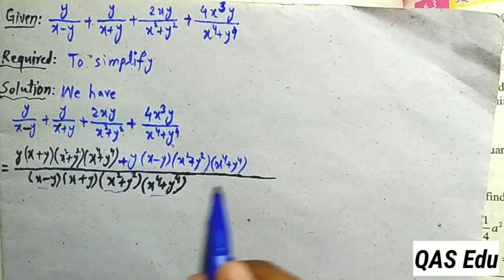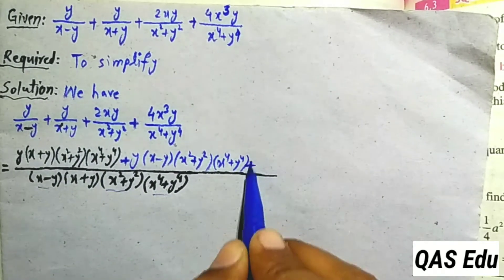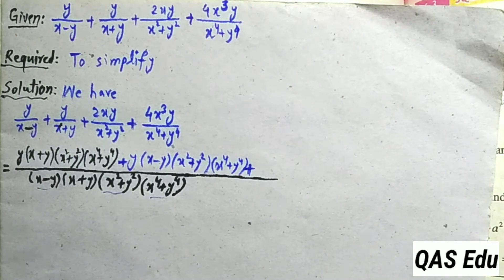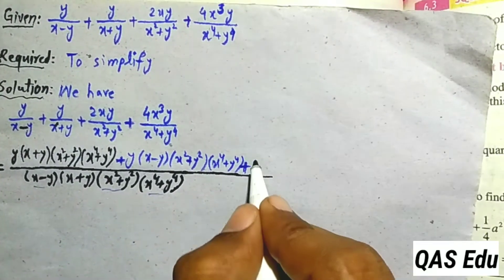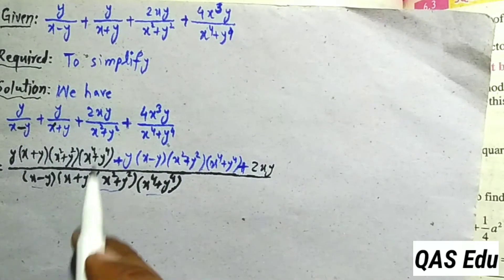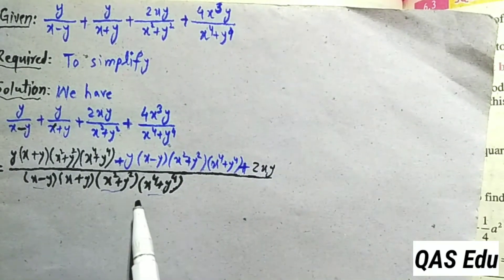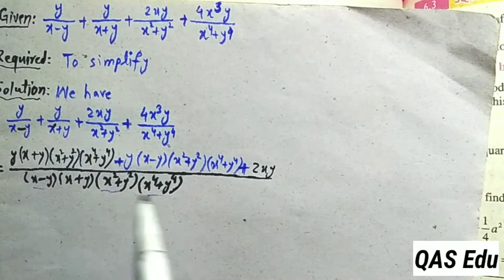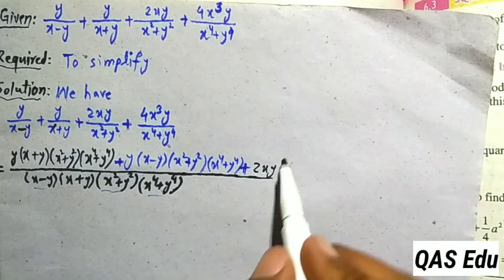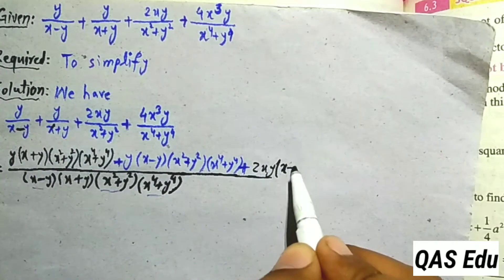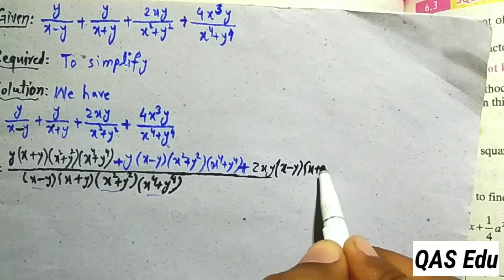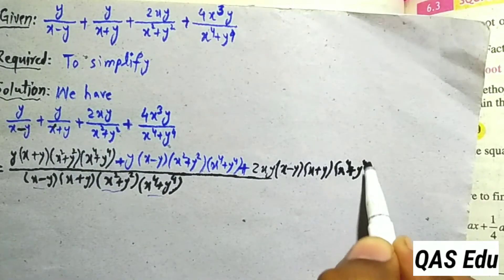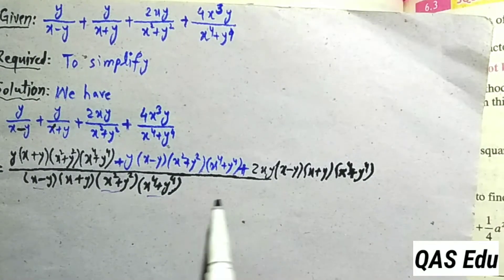x²+2xy multiply, 2xy multiply. x²+y² cancels. Three factors remaining: x minus y, x plus y, and x⁴+y⁴ multiply.